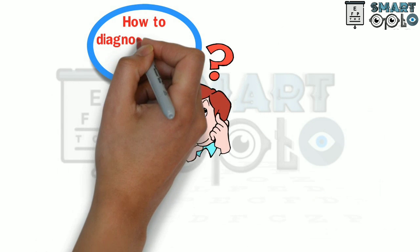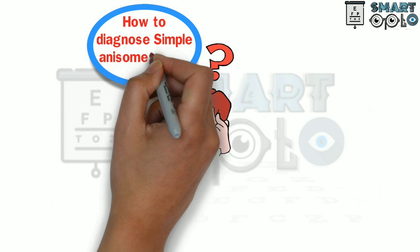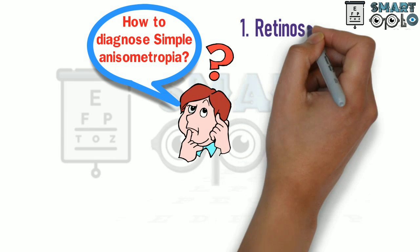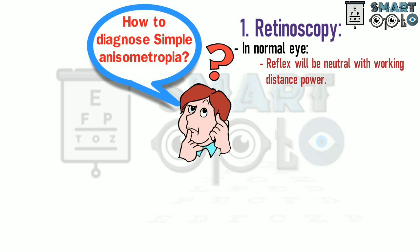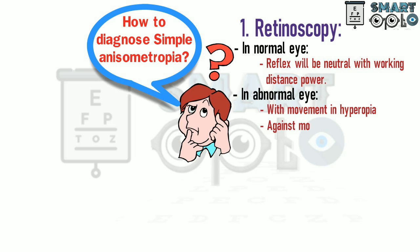Now let's see how to diagnose simple anisometropia. The first method is retinoscopy. In a normal eye, the reflex will be neutral with working distance power. In an abnormal eye with working distance power, we will see 'with' movement in hyperopia, 'against' movement in myopia, and oblique movement in astigmatism.